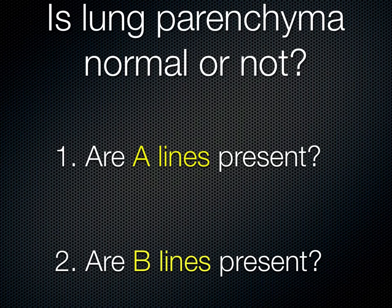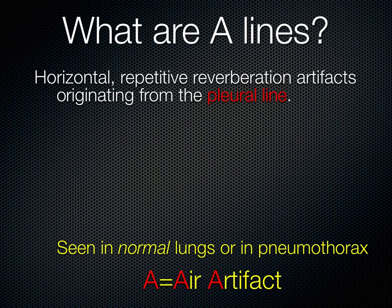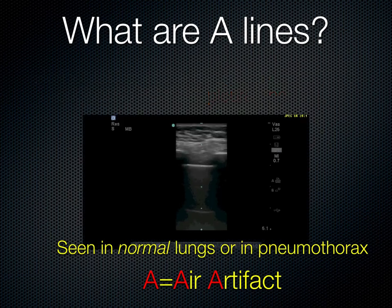What we're asking is: are there A lines present, or are there B lines present? A lines are horizontal artifacts that represent reverberations originating from the pleural line. A lines represent air, so you can see them in either normal lungs or in pneumothorax situations. When the ultrasound beam reaches the pleural line and there's air on the other side, the beam is reflected and scattered back to the probe. The delay in reflection is interpreted by the probe as depth, and you get a reflection of the pleural line equidistant from the skin.